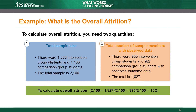To calculate overall attrition, we take the total size of the randomly assigned sample and the total number of sample members with observed data. We started with 2,100 randomly assigned students; the researchers observed outcome data for 1,827 students. The difference is 273, meaning the researchers did not observe outcome data for 273 students. We divide 273 by 2,100 and get 13%. That is our overall attrition rate.